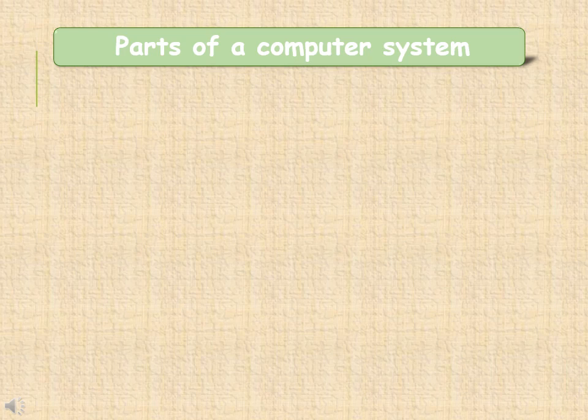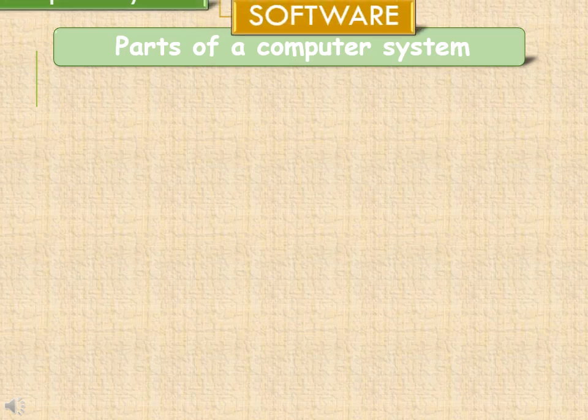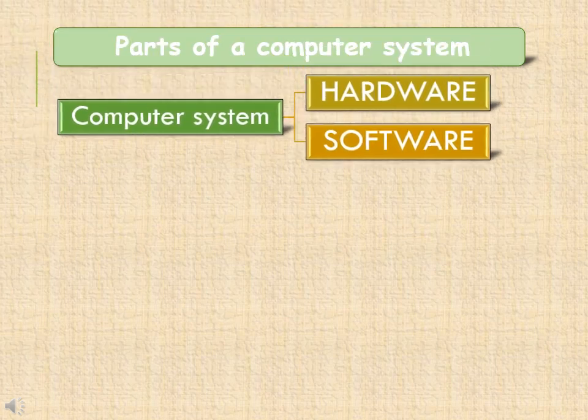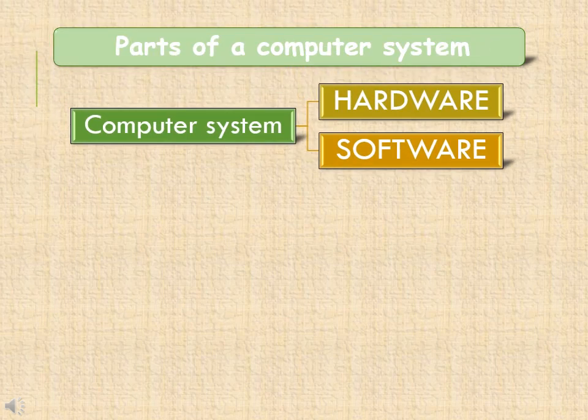As we know, a computer is an amazing machine that can do different types of jobs. It has different parts that work together to form a computer system. Therefore, the two basic parts of a computer system are hardware and software.